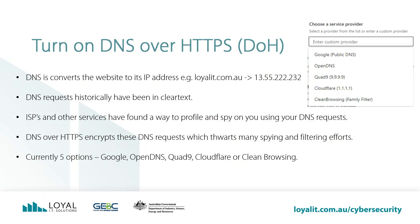Turn on DNS over HTTPS, or DOH. This is a technology we haven't covered yet. DNS is how your web browser converts the human-readable website you type into your browser to its computer-readable IP address. For example, loyalit.com.au's website IP address is 13.55.222.232. This is done transparently and quickly in the background every time you go to a website. These DNS requests historically have been in clear text, meaning anyone in between your browser and the DNS server — which is typically run by your ISP unless you specifically change it — can see them.